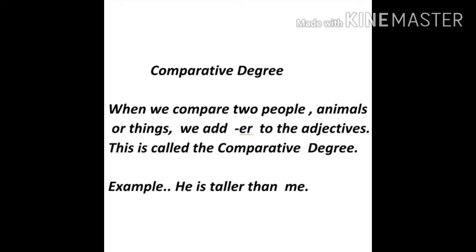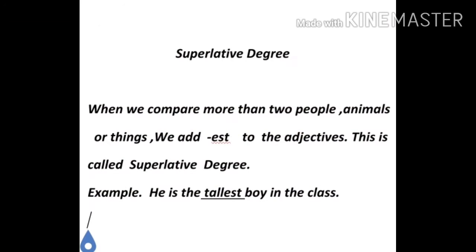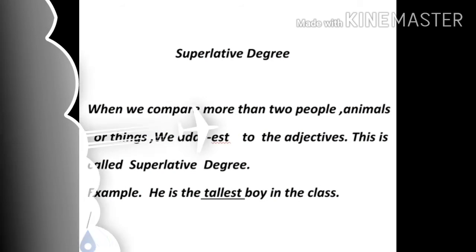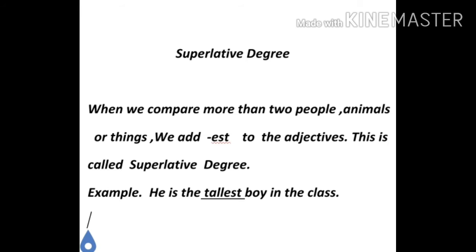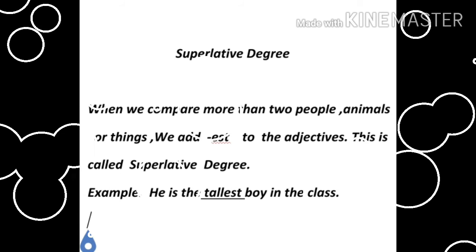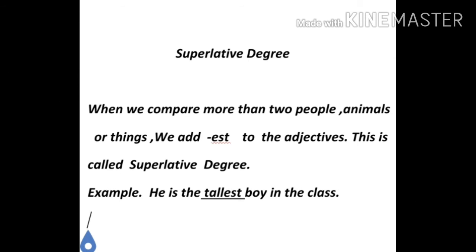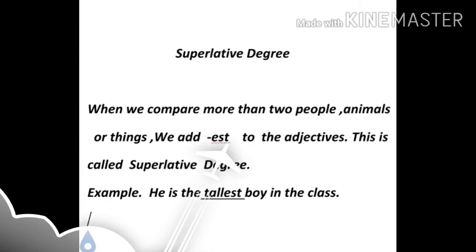Now, superlative degree. When we compare more than two persons, animals, or things, we add '-est' to the adjective, and this is called the superlative degree. For example: 'He is the tallest boy in the class.' Here, we add '-est' to 'tall' to get 'tallest', which is the superlative form of the degree.